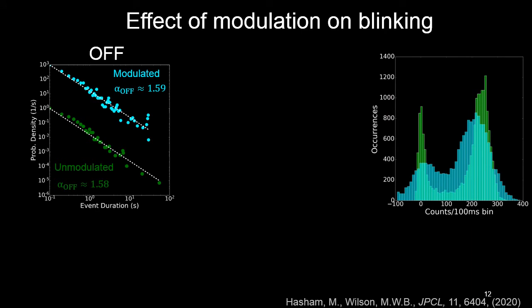After the background subtraction and cursory statistics, we can histogram the durations just like I talked about earlier, do our regular blinking analysis, and what we find is that the off state looks unaffected. Here in the blue is the modulated data and in the green the unmodulated data. We got almost identical slopes, they look about the same and roughly the value that we'd expect.